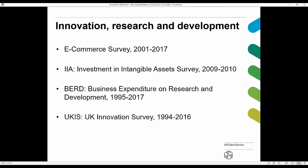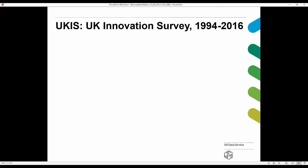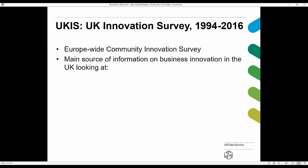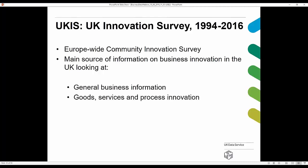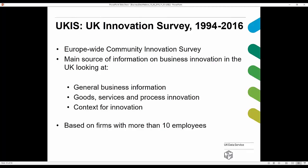The last one in this list is the UKIS — the UK Innovation Survey — which is quite widely used. The UKIS is a Europe-wide Community Innovation Survey and is the main source of information on business innovation in the UK. It looks at general business information, goods, services and process innovation, and the context for innovation, based on firms with more than 10 employees, covering approximately 16,000 enterprises. It also represents the UK's contribution to the Europe-wide Community Innovation Survey, the CIS.